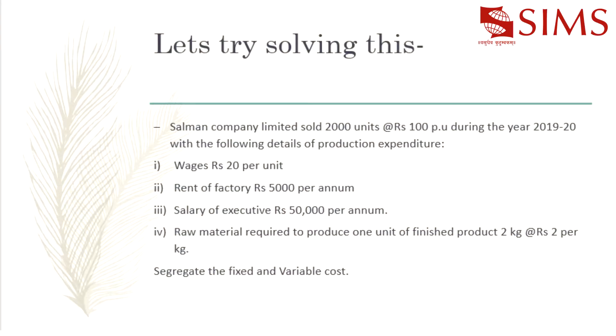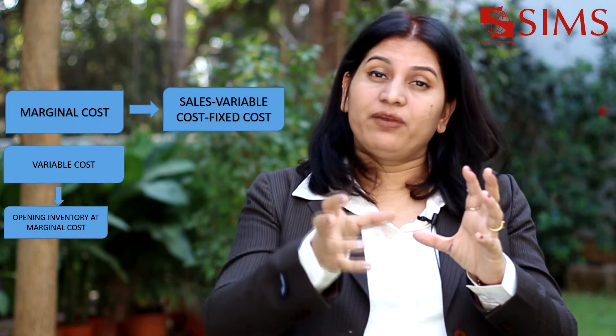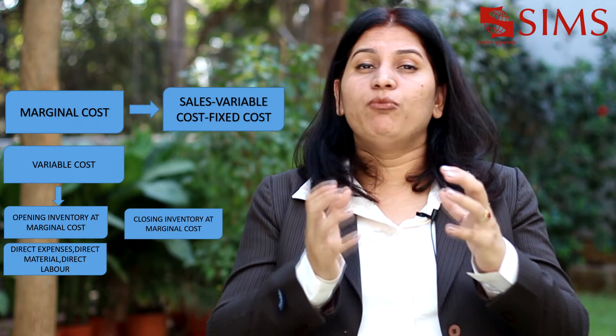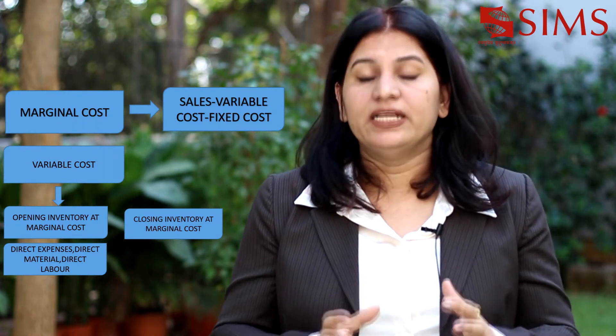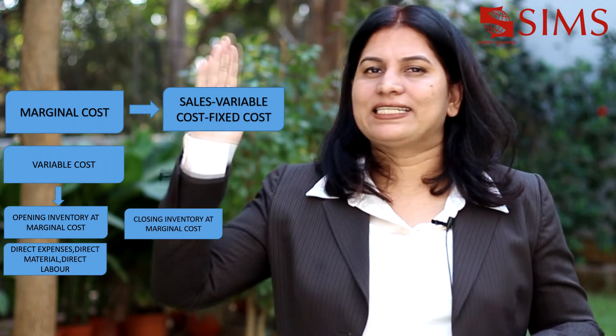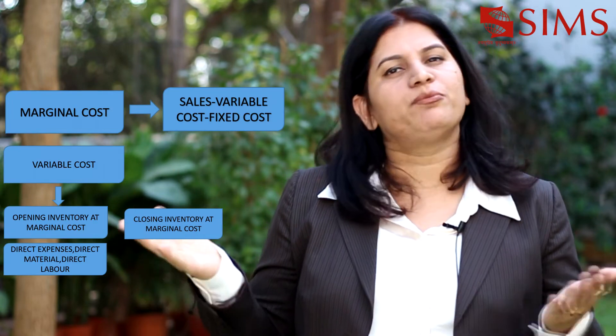Now is the time to check whether you can apply these concepts practically. A question is given where you need to segregate fixed cost and variable cost based on the behavior of both costs. How does a marginal cost statement look? You start with sales minus variable cost. Variable cost may include opening inventory at marginal cost, direct expenses, direct labor, direct material, and closing inventory at marginal cost. Deducting all this from sales gives you contribution. From contribution, you deduct fixed cost to arrive at net profit. So the marginal cost statement goes: sales minus variable cost gives contribution; contribution minus FC gives net profit.